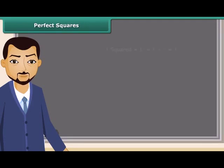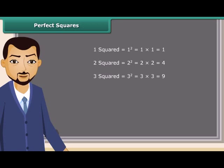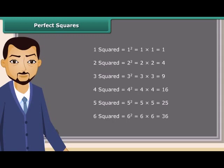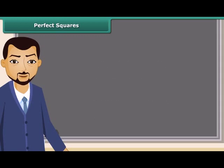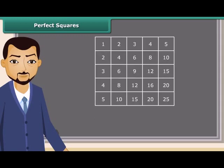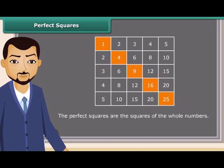Let us read: 1 square is 1, 2 square is 4, 3 square is 9, 4 square is 16, 5 square is 25, and so on. We can also find squares on the multiplication table. Do you know what do we call these numbers? They are called perfect squares. The perfect squares are the squares of the whole numbers.